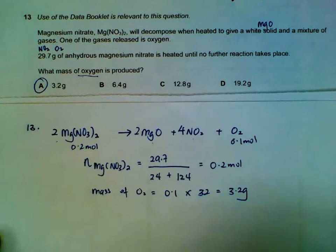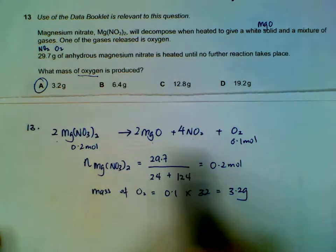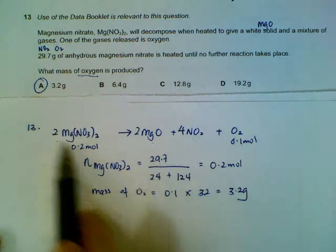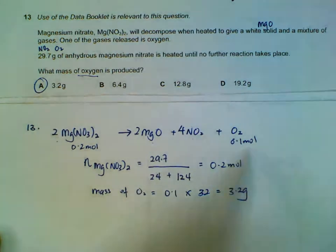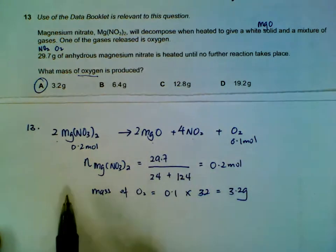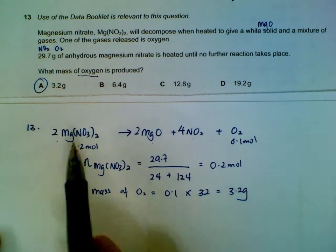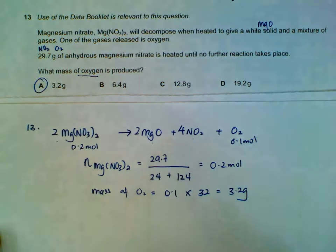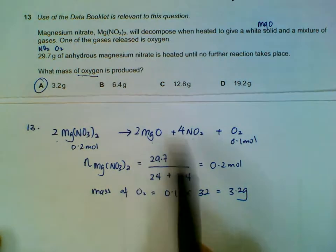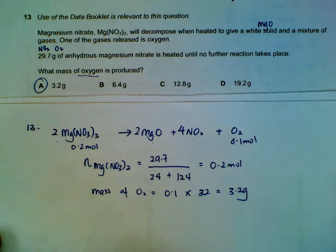Form the equation and be very familiar with the decomposition of Group 2 nitrates. Then you can find the moles for nitrates and find the moles for any of the other three products that come out.